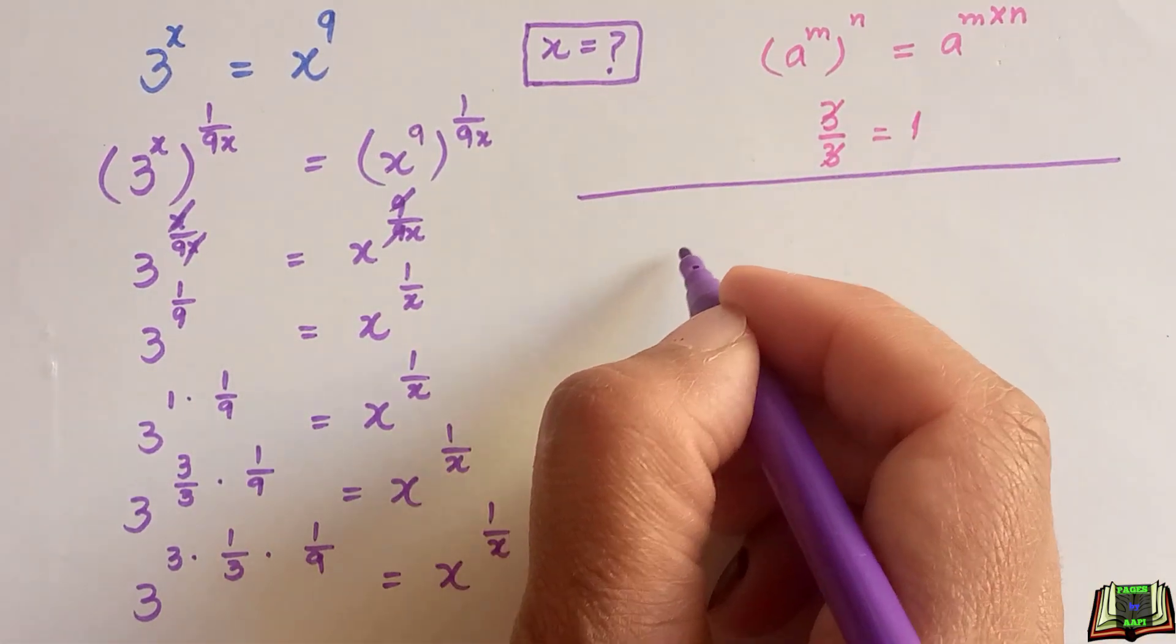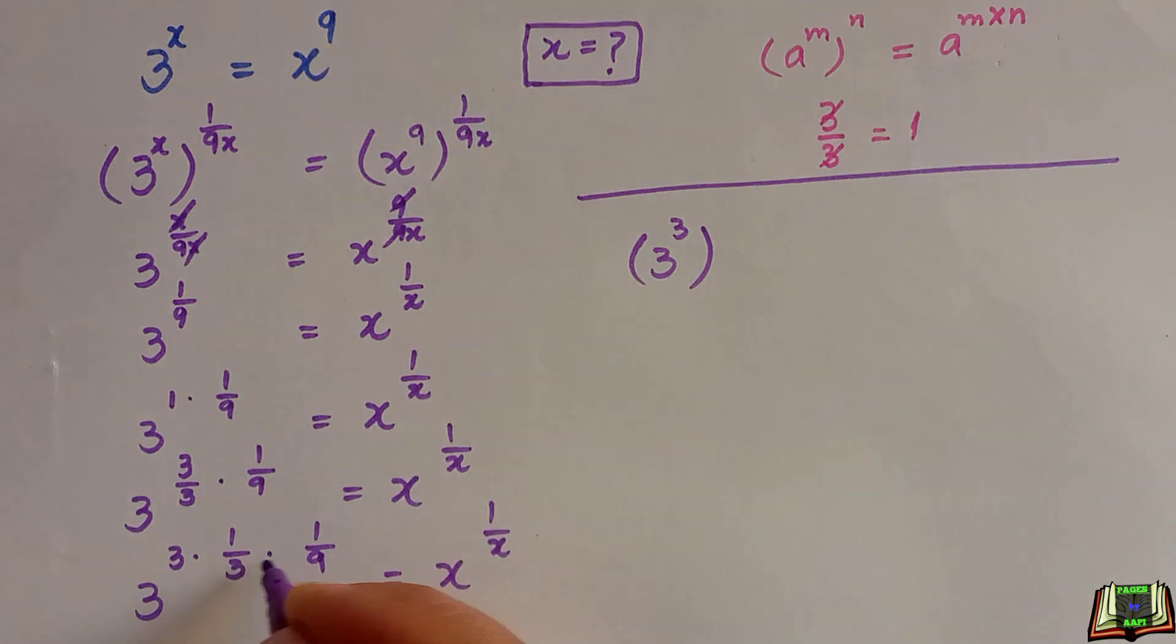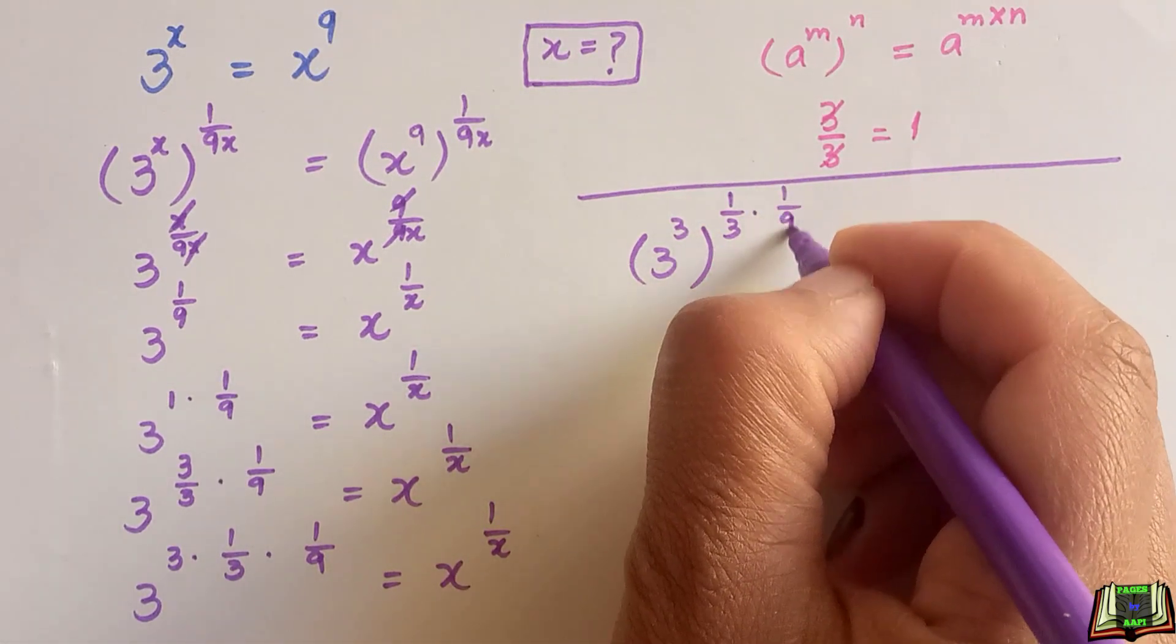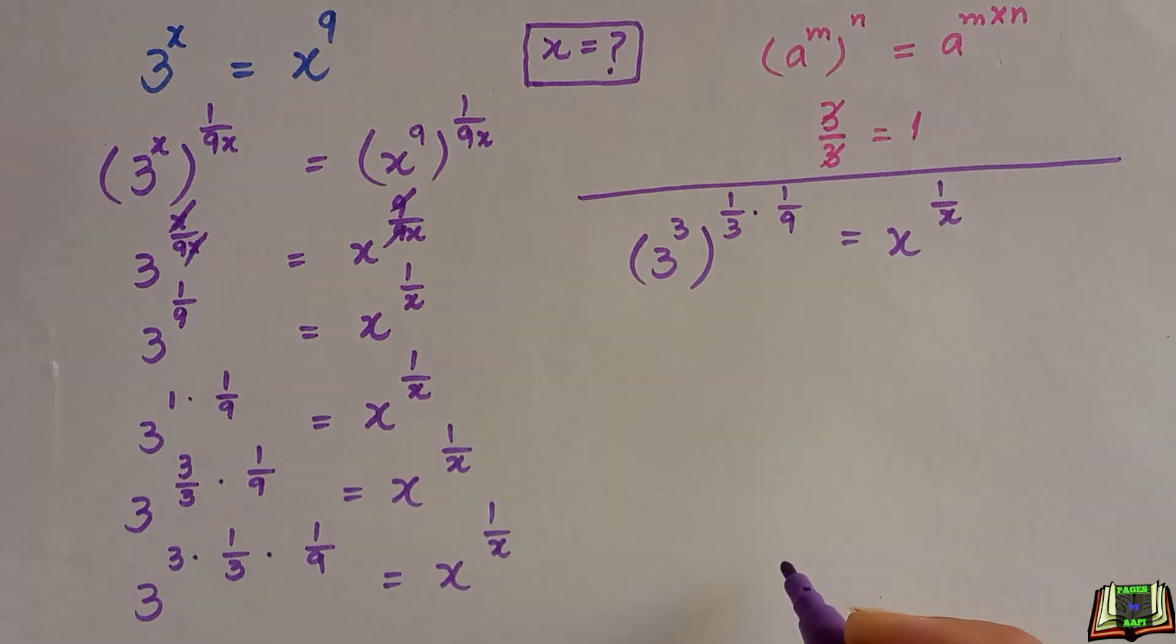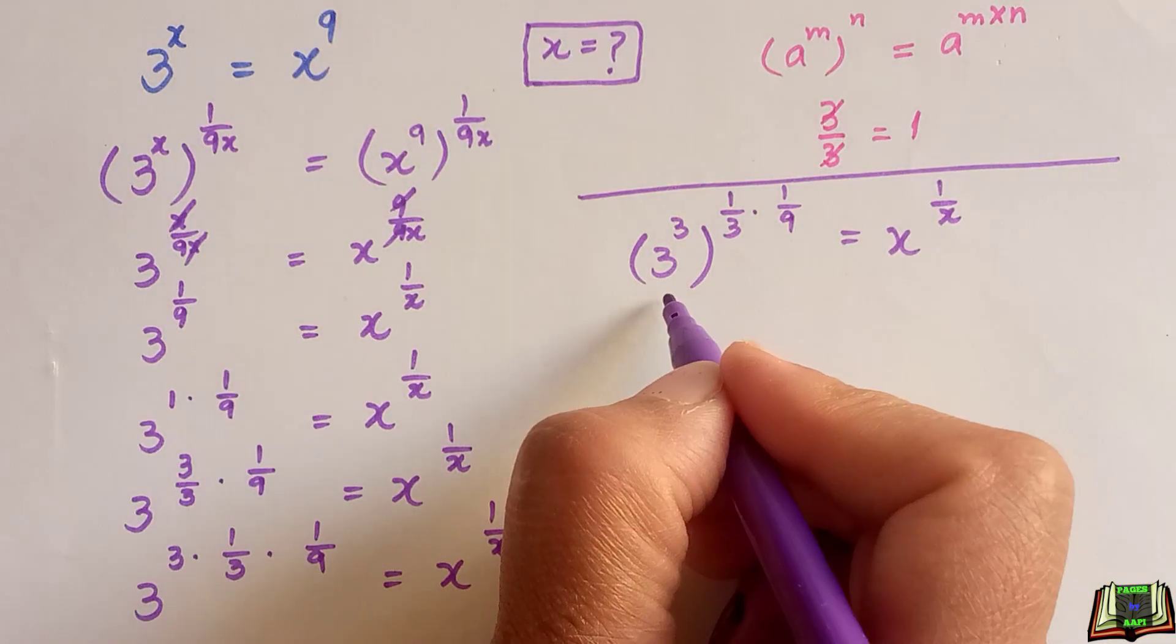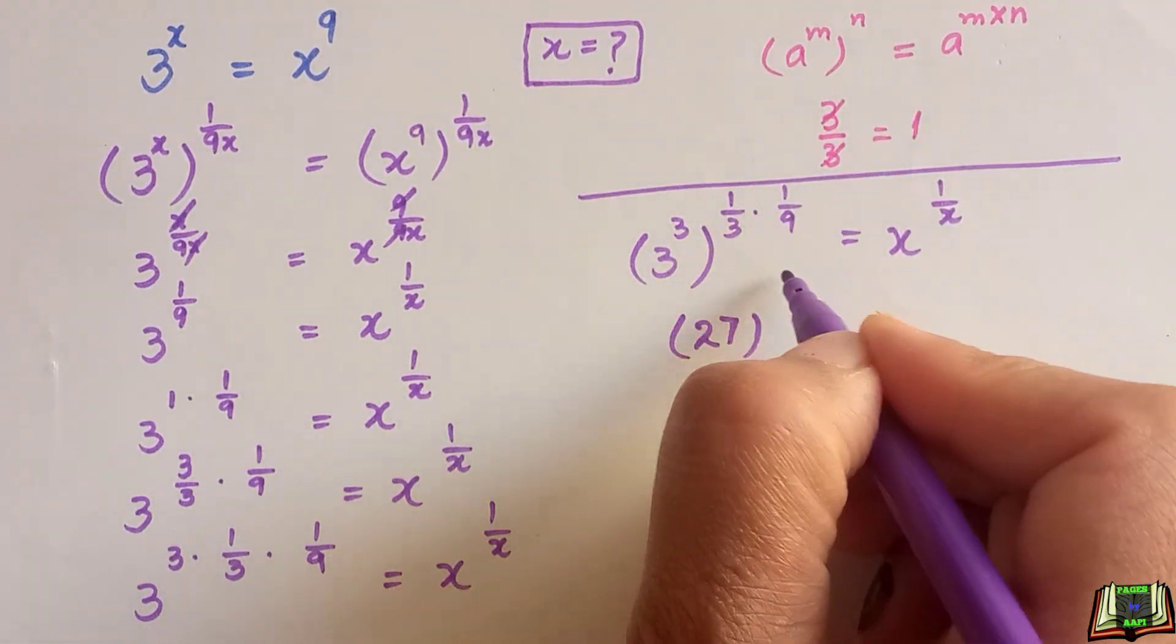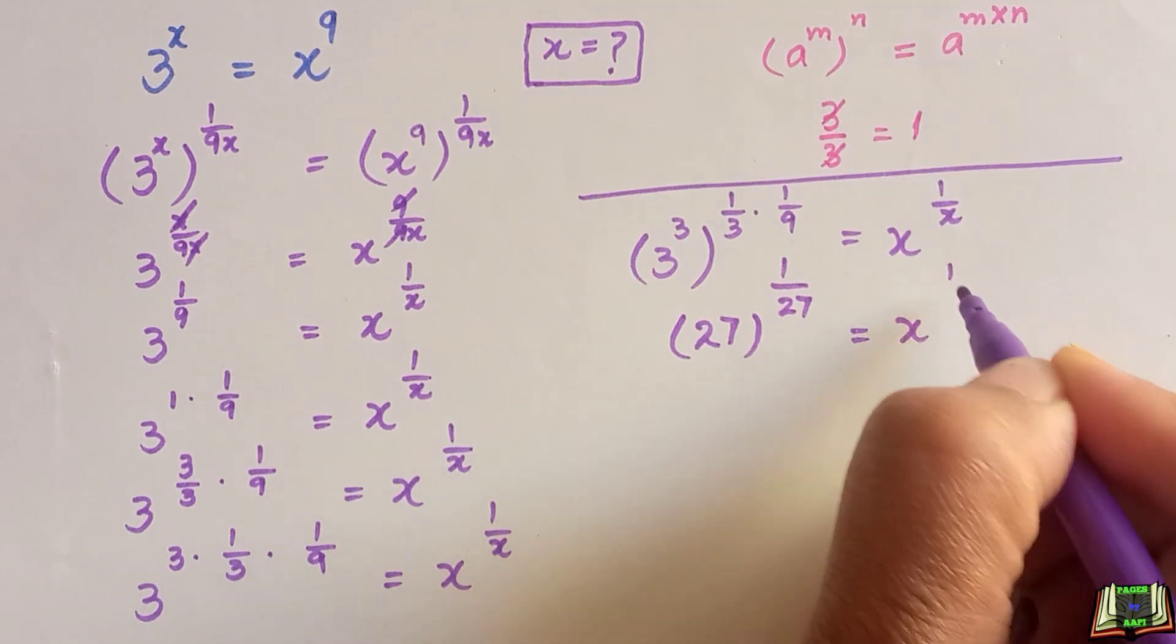3 raised to power 3 raised to power 1 over 3 times 1 over 9 equals x raised to power 1 over x. This 3 raised to power 3 is 3 times 3 times 3, which is equal to 27, and raised to power 1 over 27 equals x raised to power 1 over x.